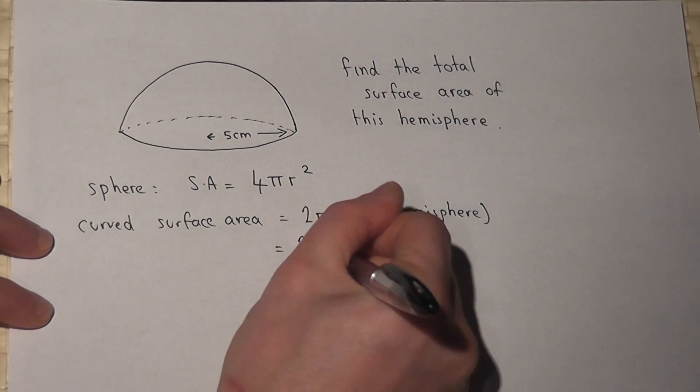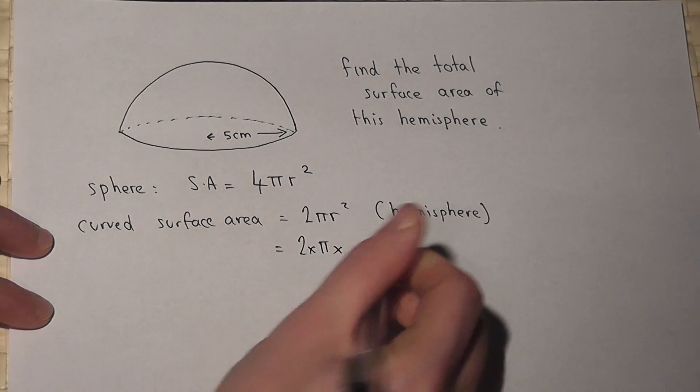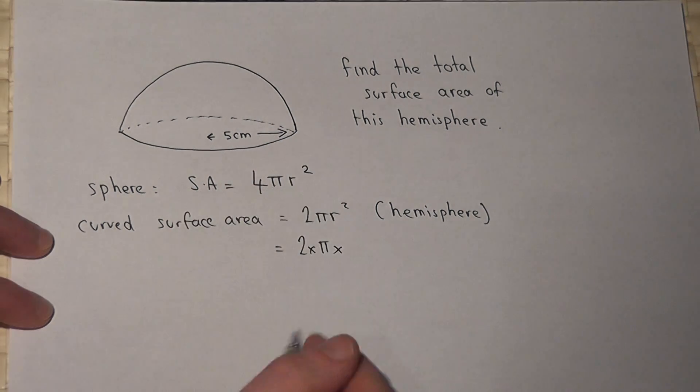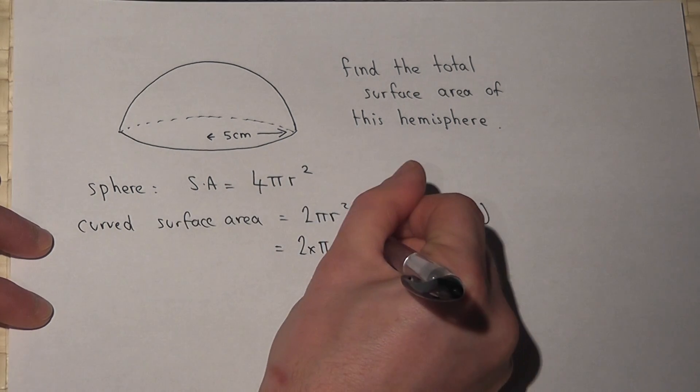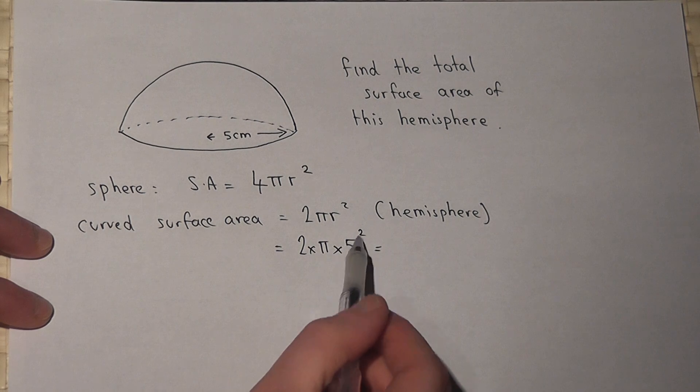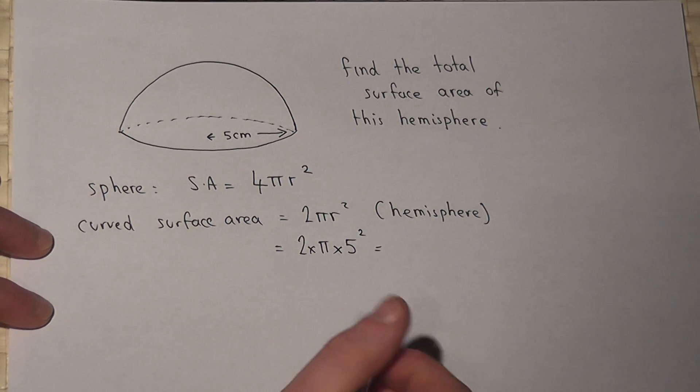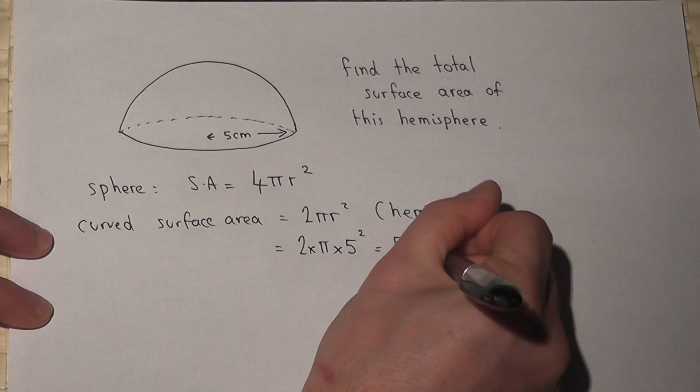So for this, I do 2 times pi times r squared. r is 5, so 2 times pi times 5 squared. Now 5 squared is 25, times by 2 is 50, so it's 50 pi.